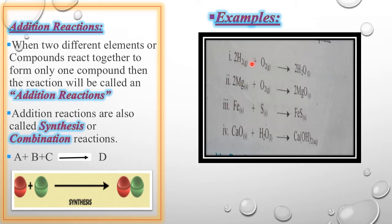The first example: When Hydrogen and Oxygen react, water is formed. When Magnesium and Oxygen react, Magnesium oxide is formed. When Iron and Sulfur react, Iron sulfide is formed. And the last example: we have Calcium oxide, and Calcium oxide when it reacts with water, Calcium hydroxide is formed.